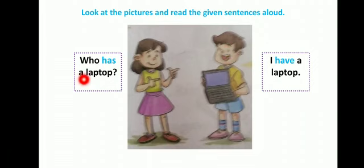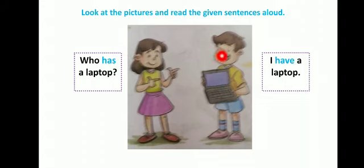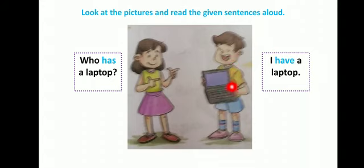Next है — boy जो है, वो answer दे रहा है। Boy के लिए he use होता है, but जब वो खुद answer देगा, तो I से start करेगा। मेरे पास laptop है। जब I, we, you and they हैं, उसके साथ have use होगा। So I have a laptop. Has किसके साथ use होगा? He, she, और it के साथ। और I, we, you, they के साथ have use होगा।